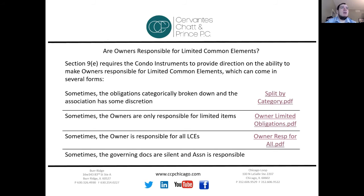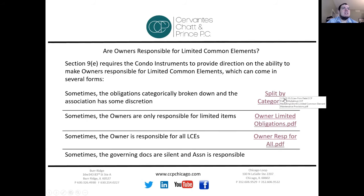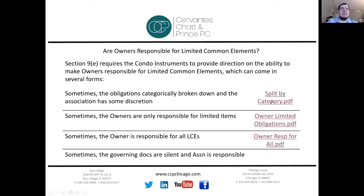So the real question is: are owners responsible for the limited common elements, and what are our breakdowns? There are several different types of breakdowns that can exist. I've pulled a few examples from documents from our associations — let's take a look at some of these documents.